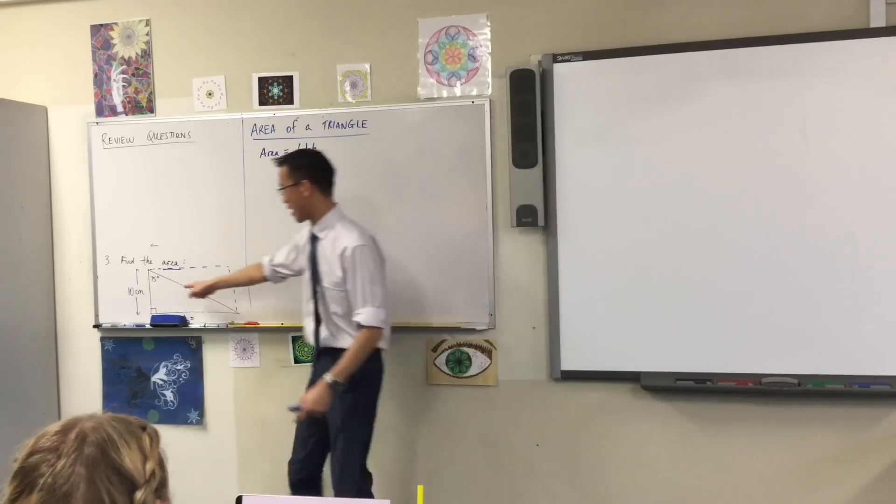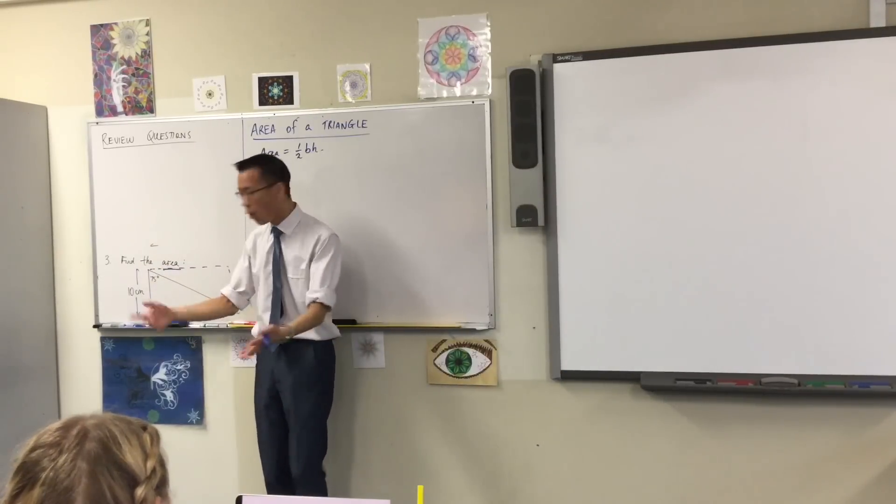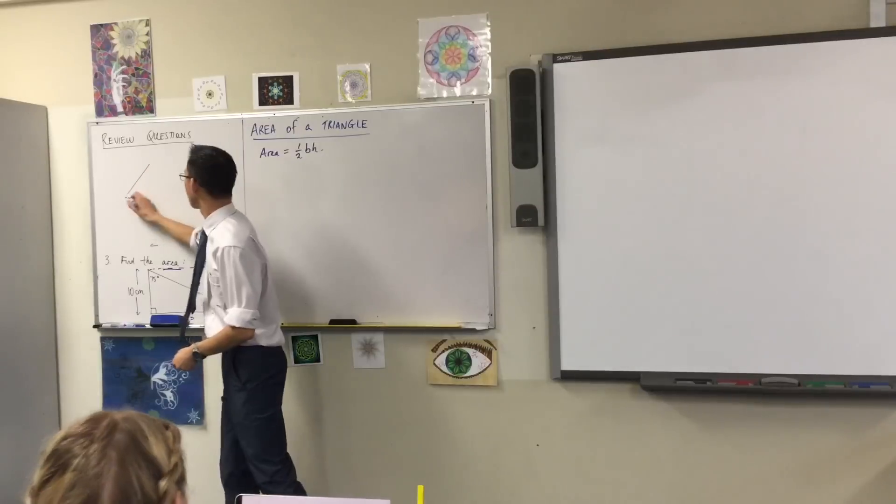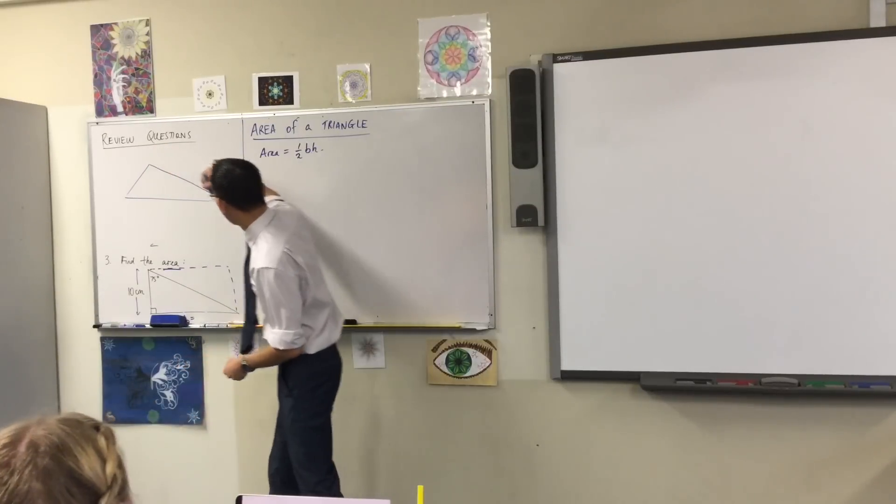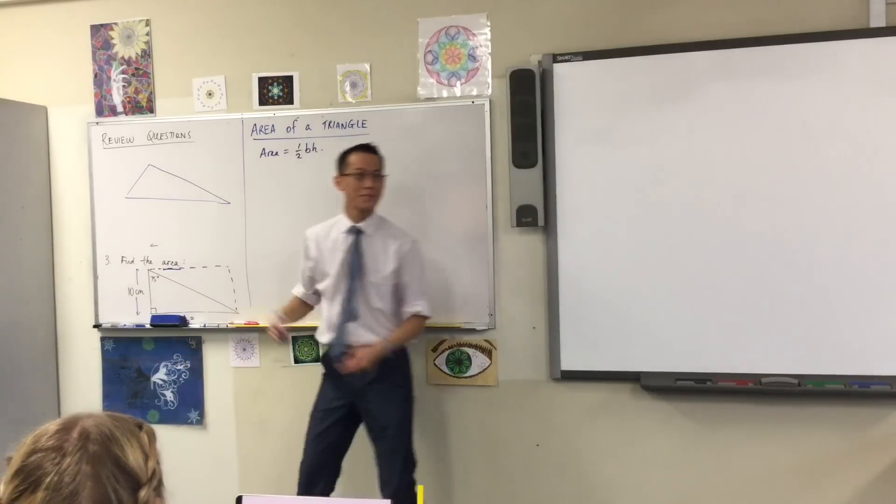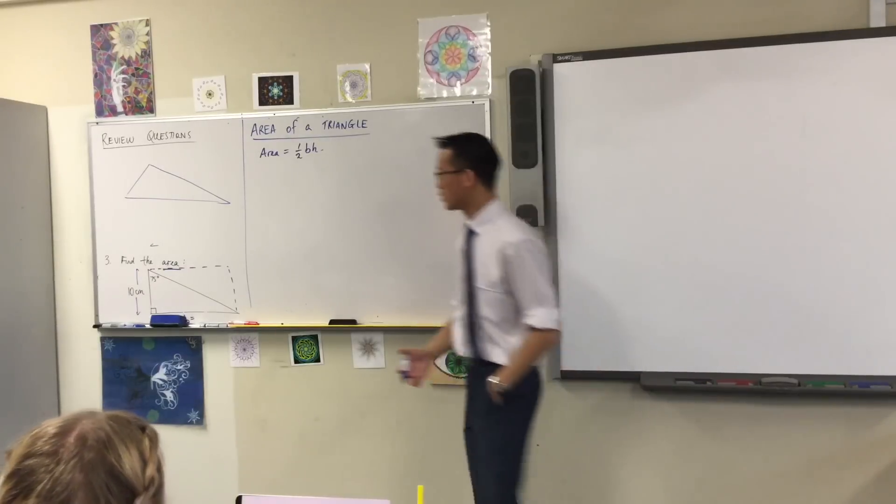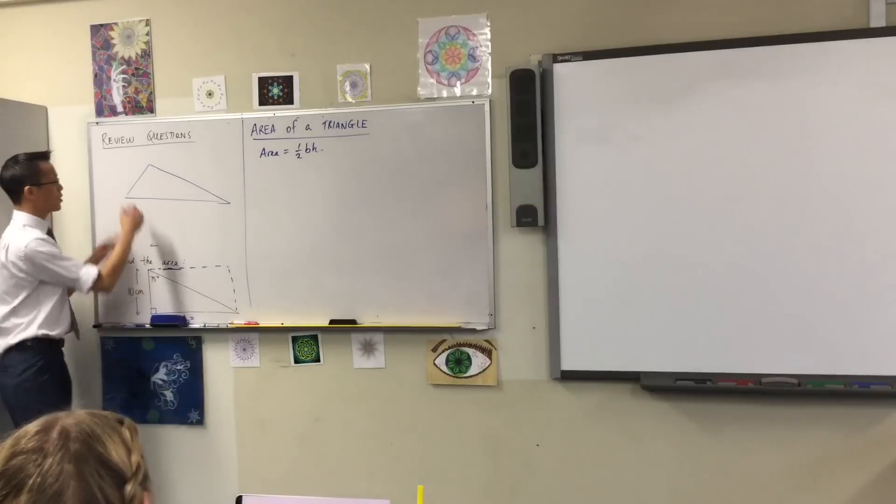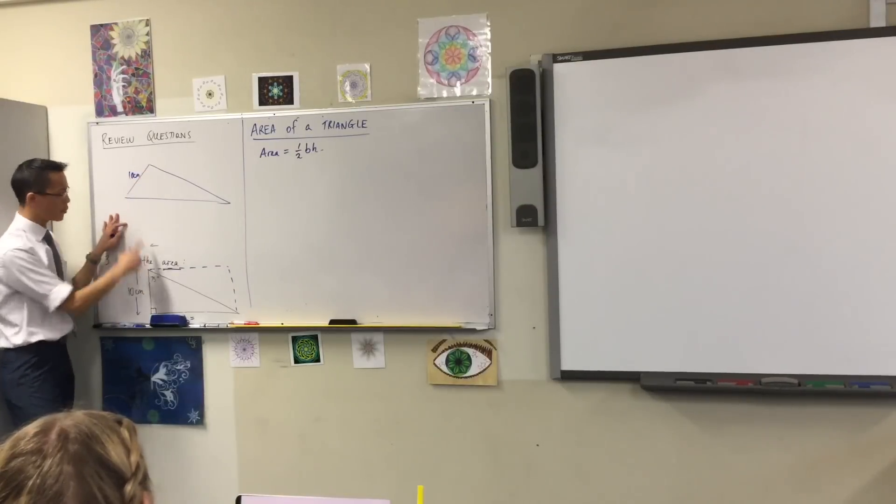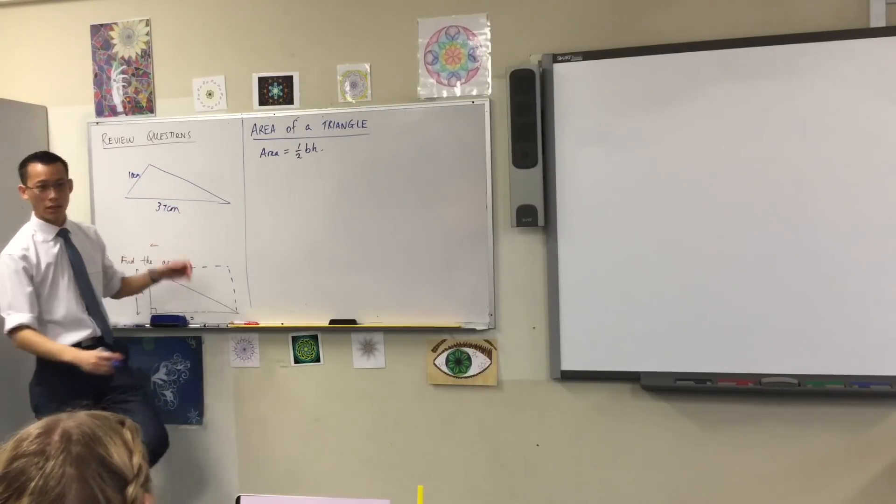So you either need a right angle triangle that's perpendicular, or if I give you a triangle and it's not right angled, for instance, if this was 10 over here, and then when we work this out 37, or something like this, okay?